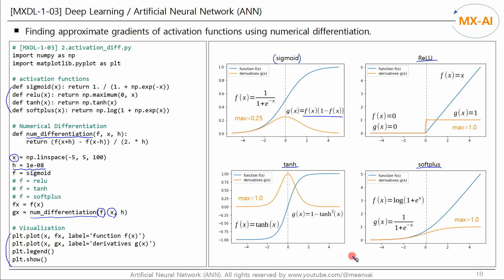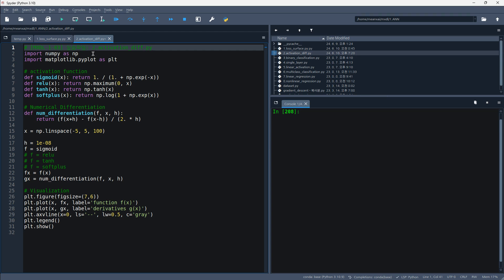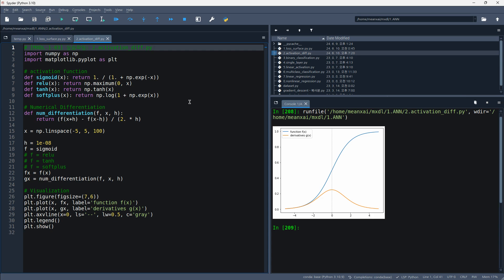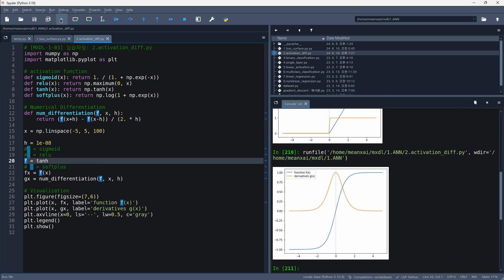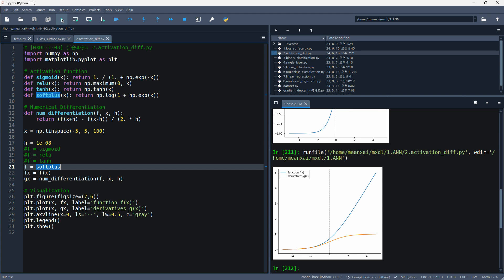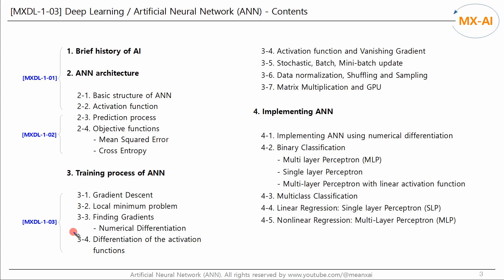In this series covering the basics of ANNs, we will implement an ANN using this method. The results of the sigmoid, ReLU, TANH, and softplus functions have been shown. So far, we have looked at the gradient descent method and numerical differentiation method. In the next video, we will look at vanishing gradient, batch update, and more.